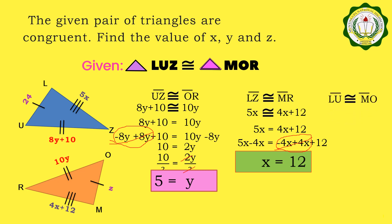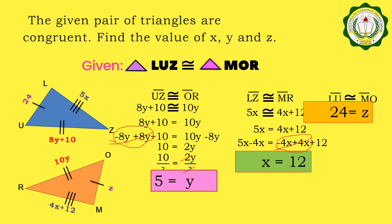And for the last variable, we have segment LU congruent to segment MO. Segment LU is equal to 24 while segment MO is equal to Z. Therefore, the value of Z is equal to 24. No need for us to solve because it is already given.